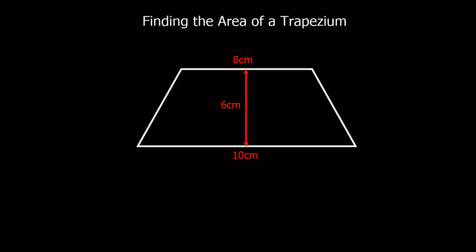Trapezium. In this video we're going to look at the area of a trapezium. A trapezium is a shape with two parallel sides. So this side here and this side here run in the same direction — they're parallel.